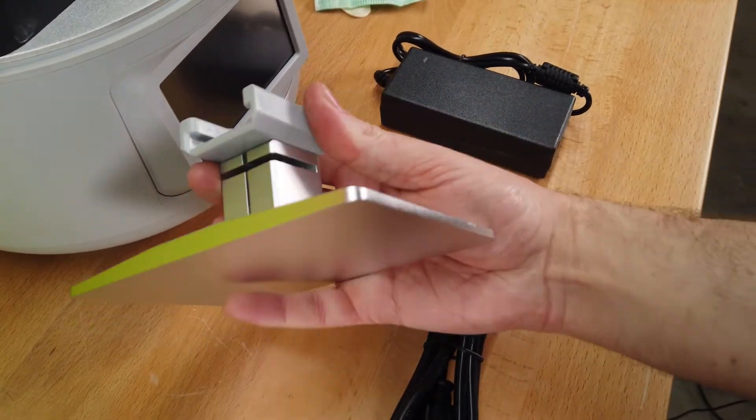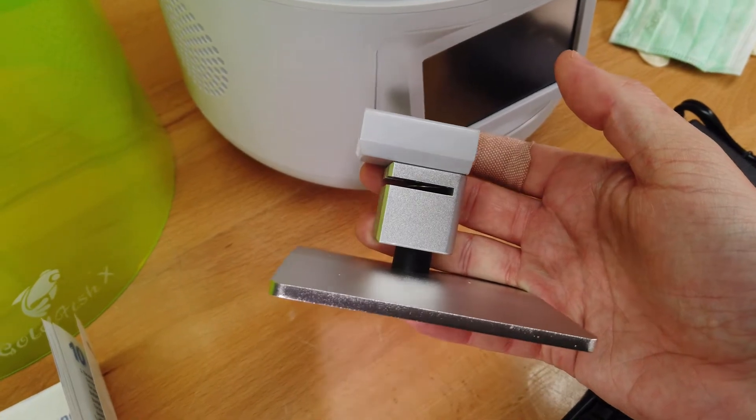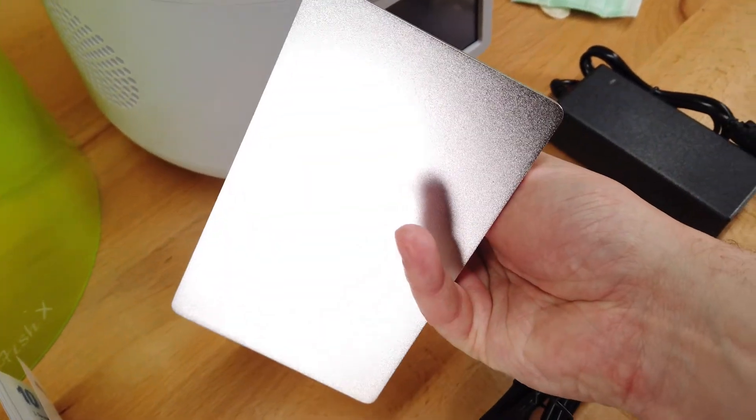The build plate is kind of weird. It has a top plastic piece that slides on and the rest of it looks like aluminum, and the actual build surface has a little bit of texture to it.